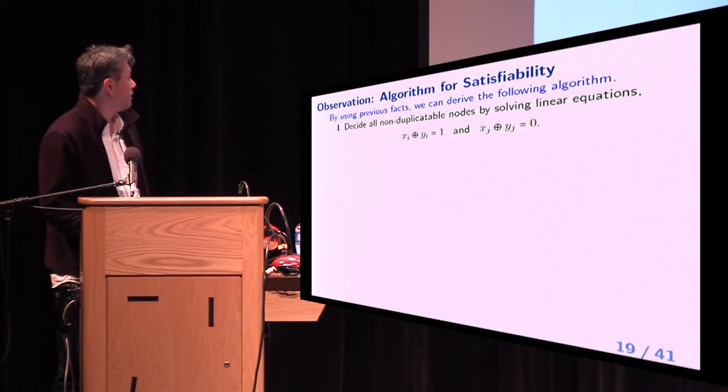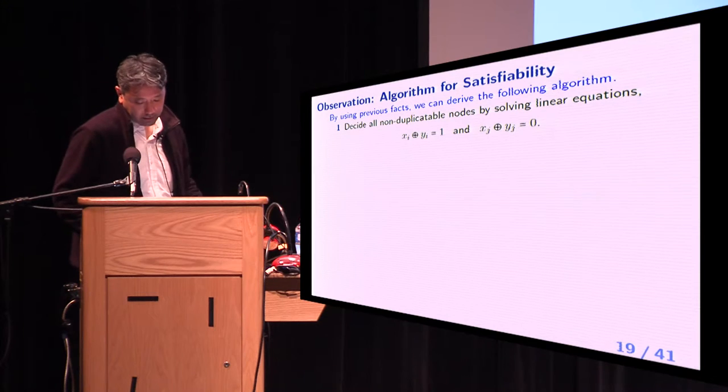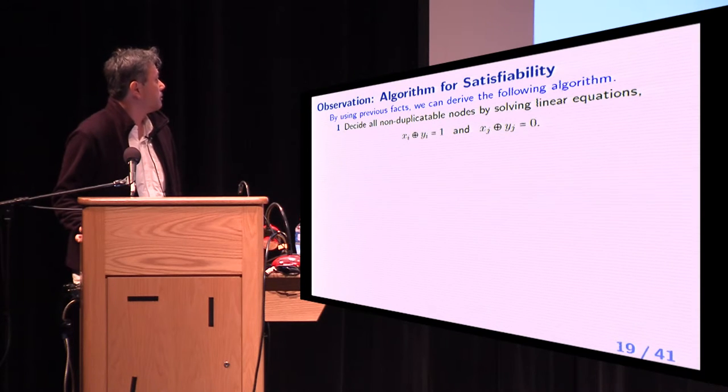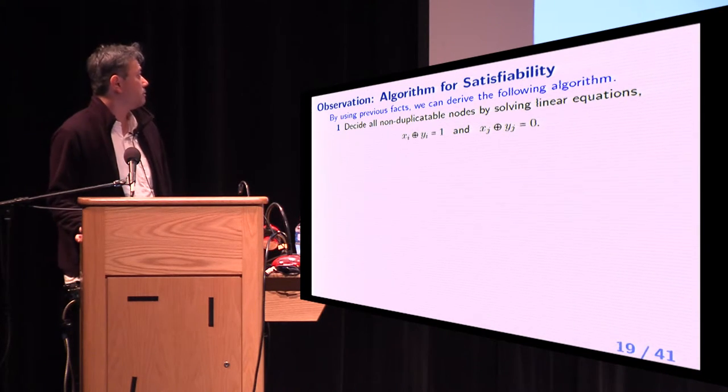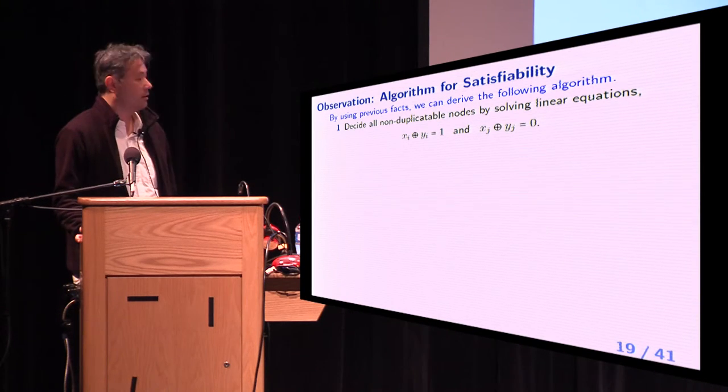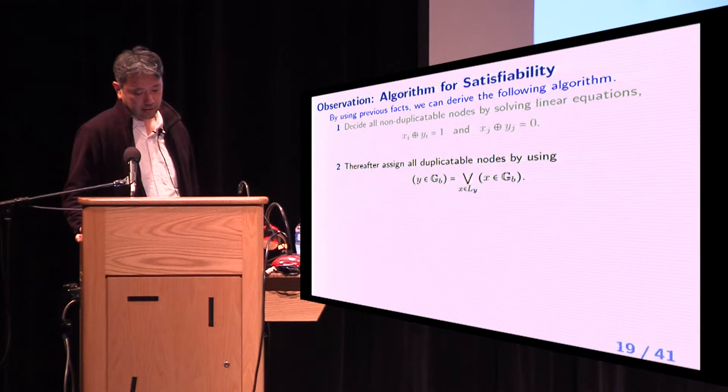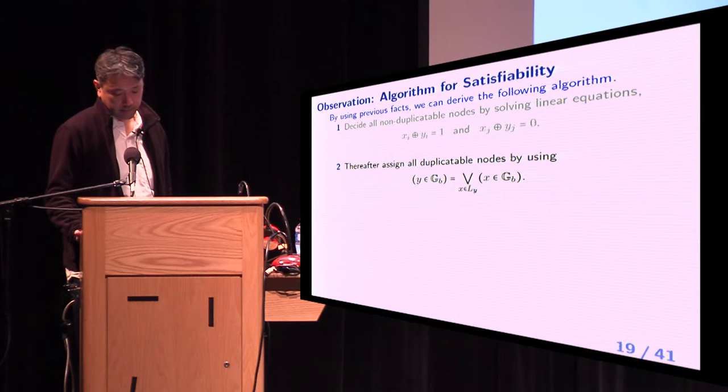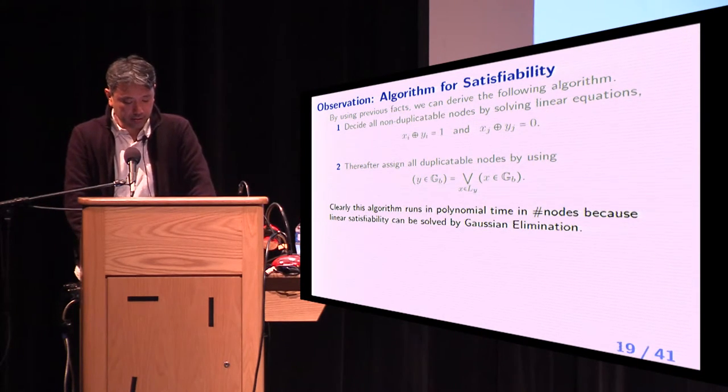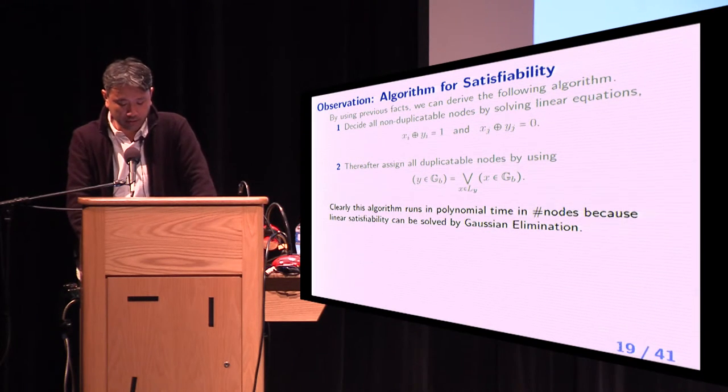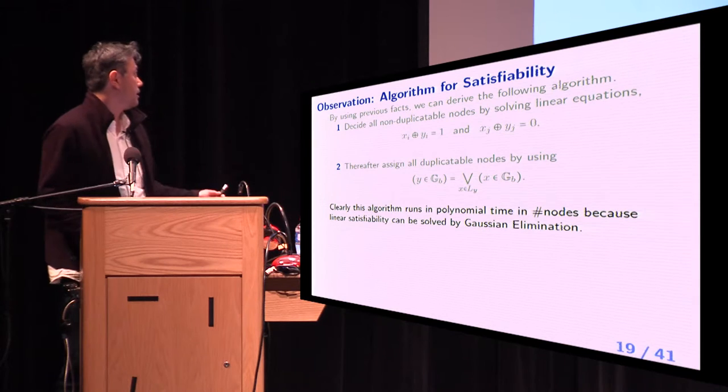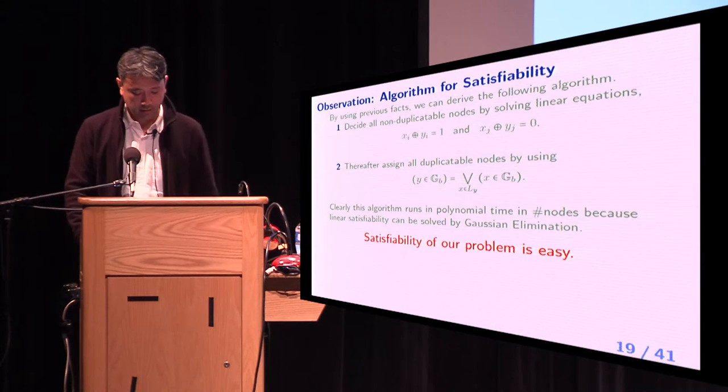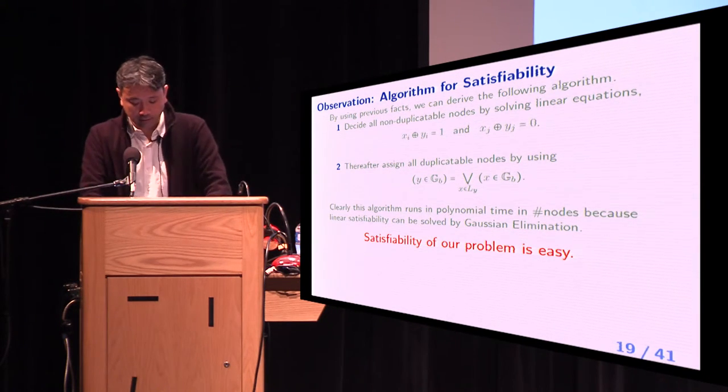By using facts in the previous slide, we can derive the following algorithm. Step 1, decide all non-duplicatable nodes by solving linear equations. Step 2, assign all duplicatable nodes by using this equation. Clearly, this algorithm runs in polynomial time in number of nodes because linear satisfiability can be solved by Gaussian elimination. This means, satisfiability of our problem is easy.